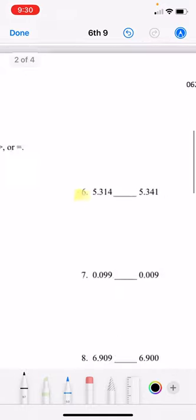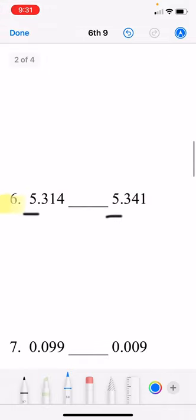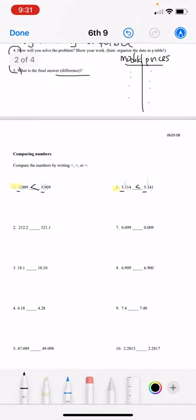Okay. Number six. 5.314. And then 5.341. Okay. Well, the tens... Values... Place values the same. And then which one's bigger? One or four? Four. So again, we have less than.